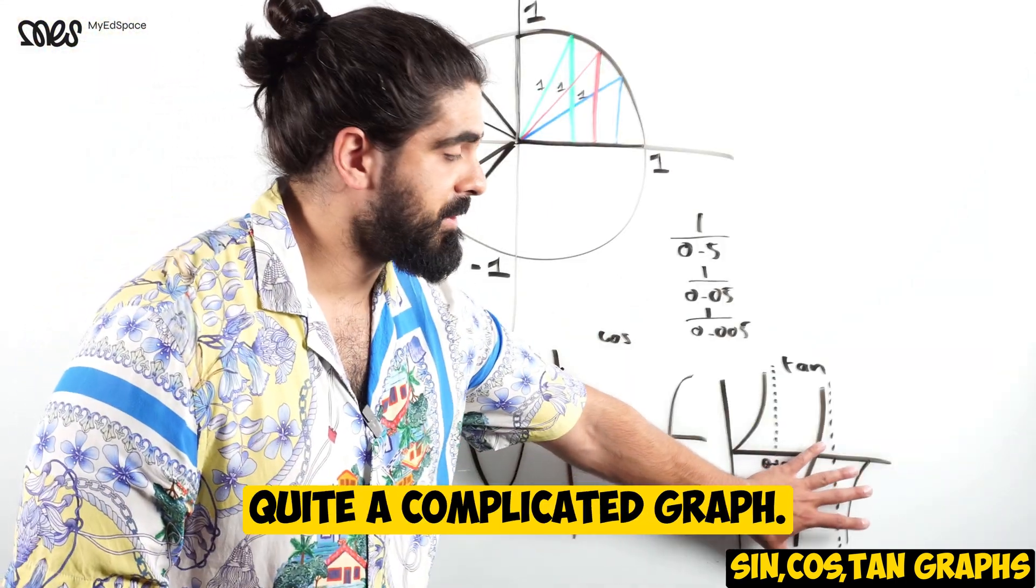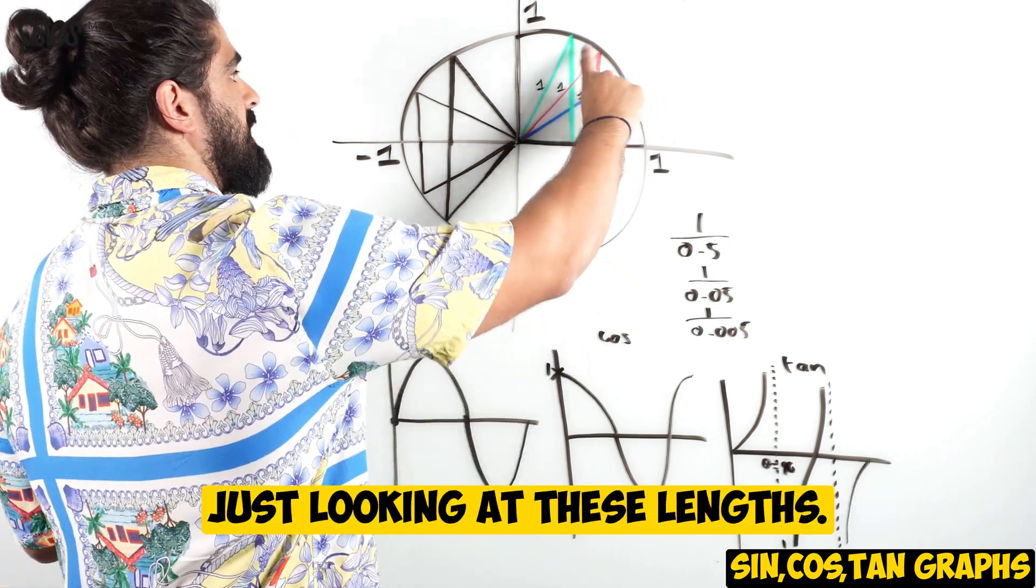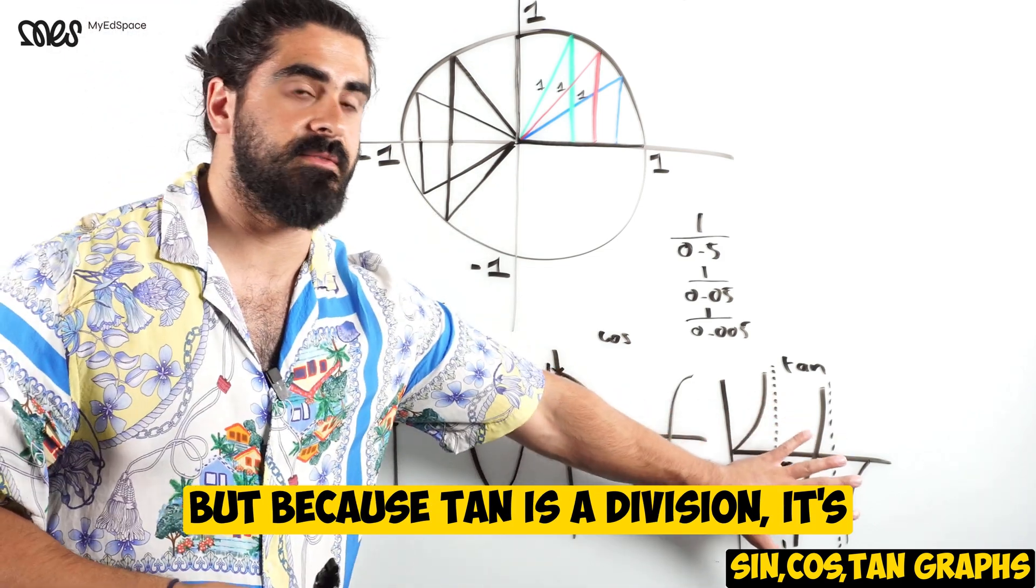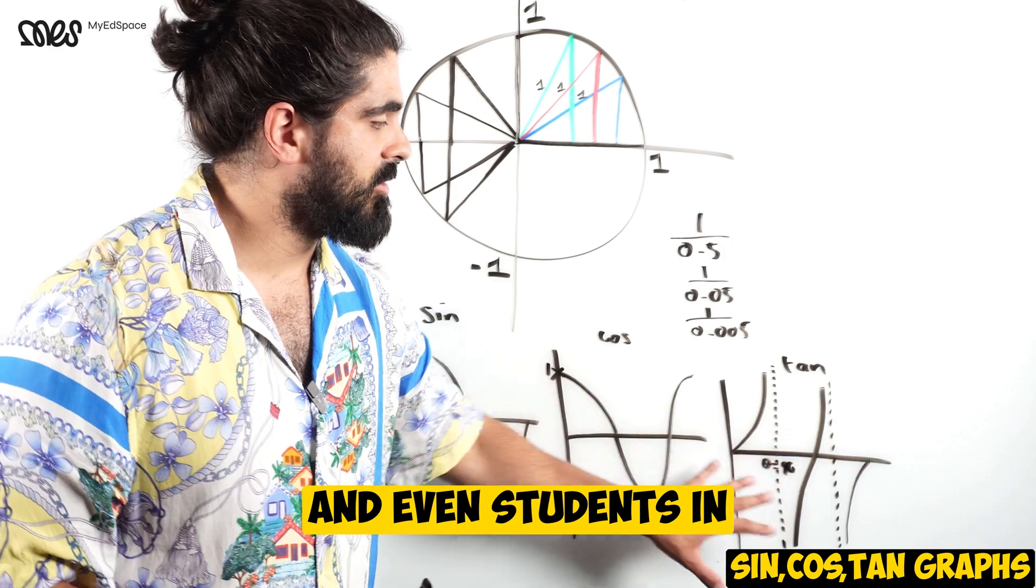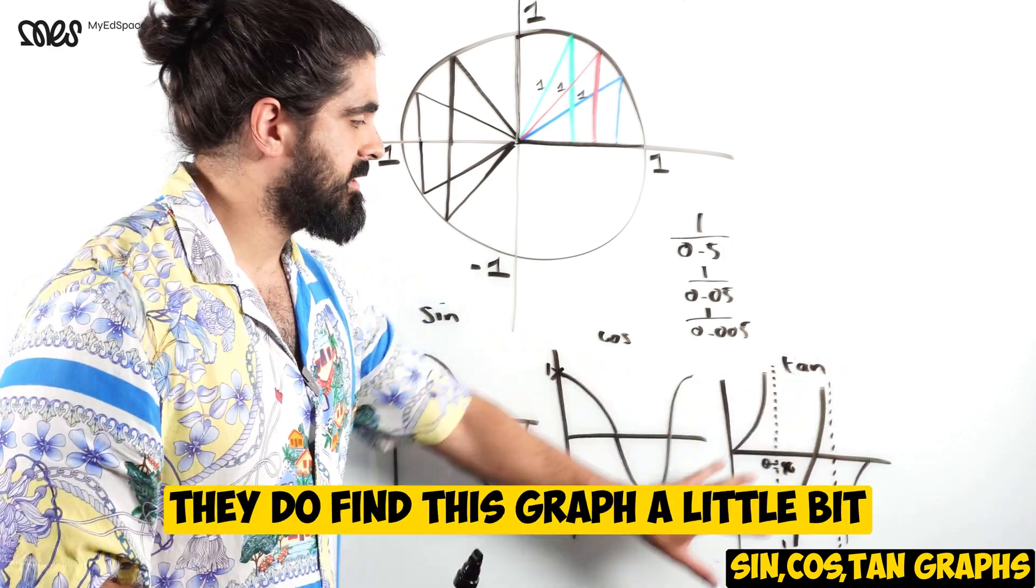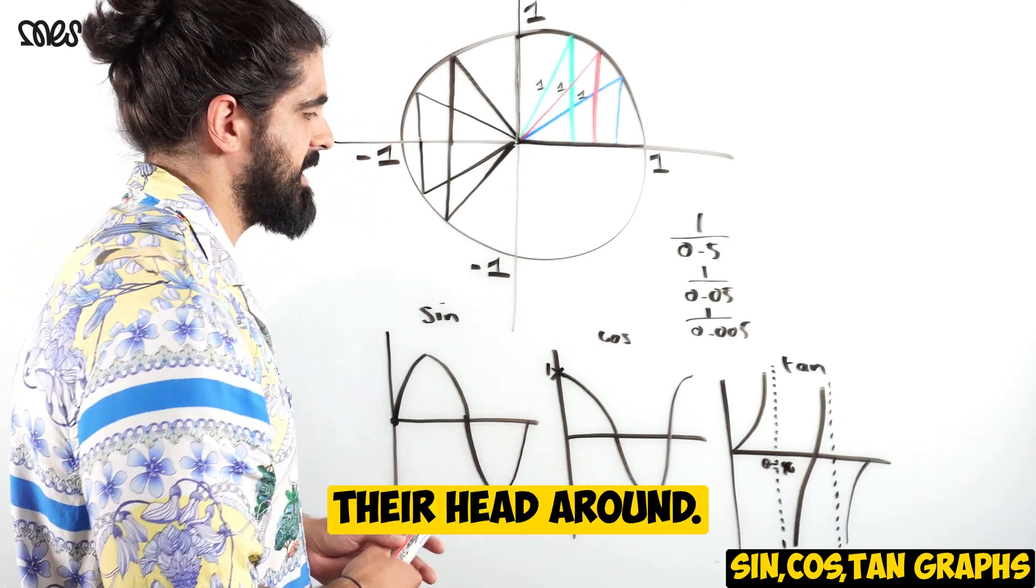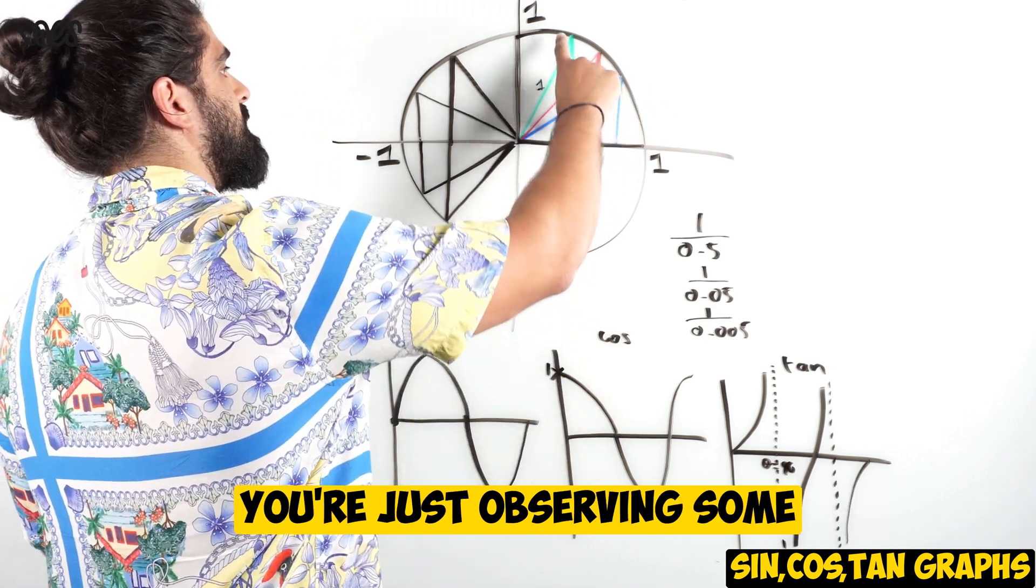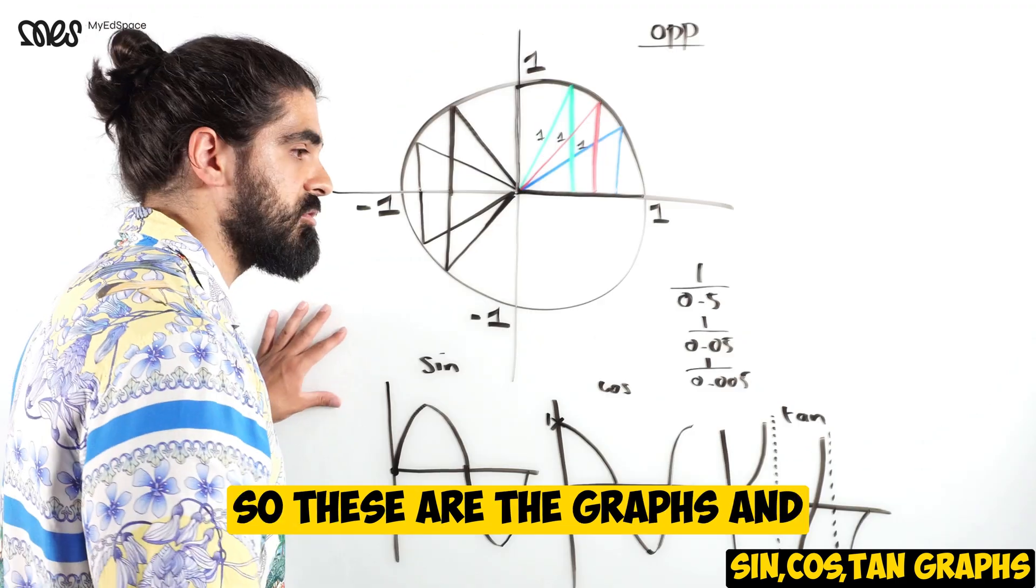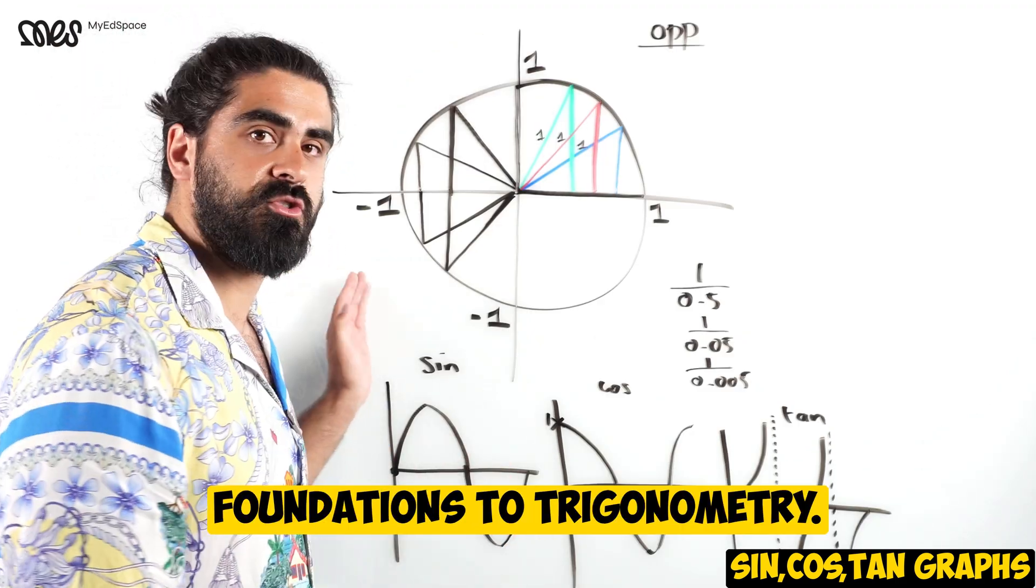The tan graph is quite a complicated graph. The sin and cos graphs are easier to visualize when you're just looking at these lengths. But because tan is a division, it's a little bit harder of a graph. Even students in their mid-teen years find this graph a little bit more troubling. But the sin and cos graphs, definitely, you're just observing some measurements here. So these are the graphs, and this is the foundations to trigonometry.